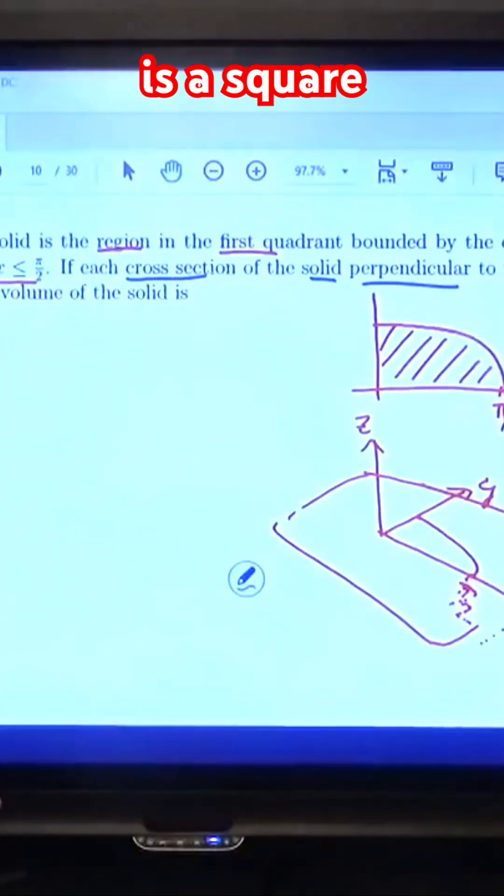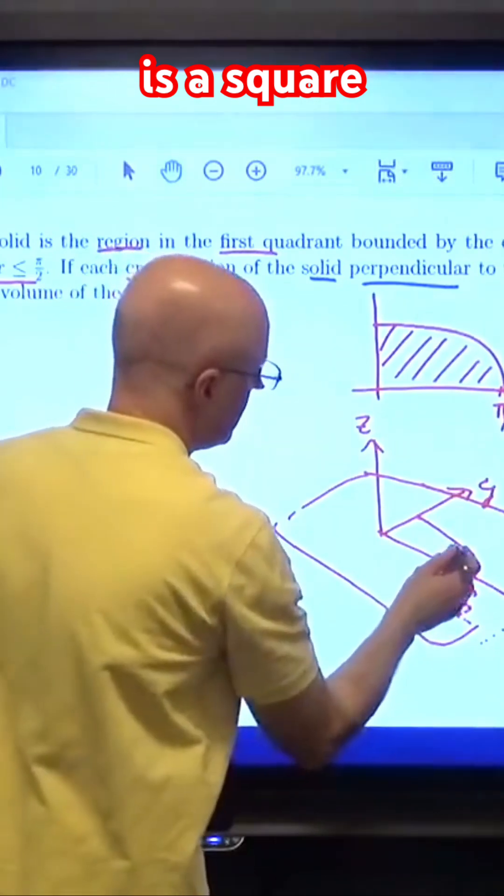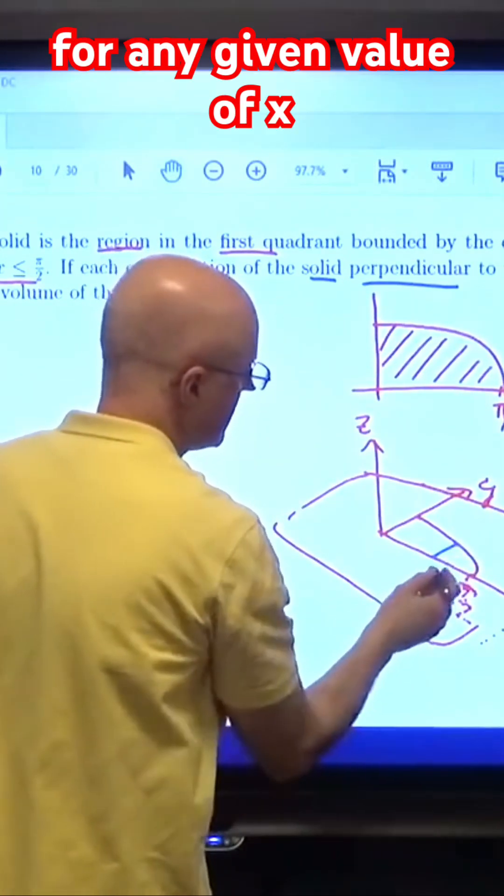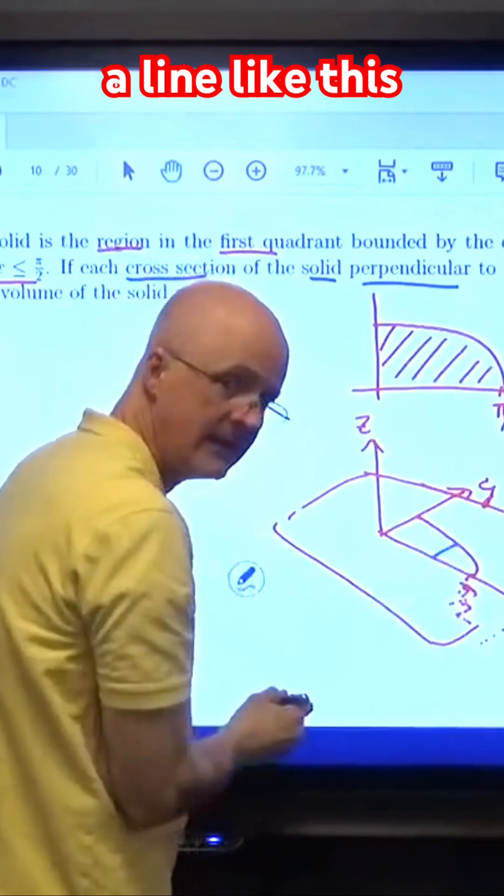Is a square. The base of each square for any given value of x would be a line like this.